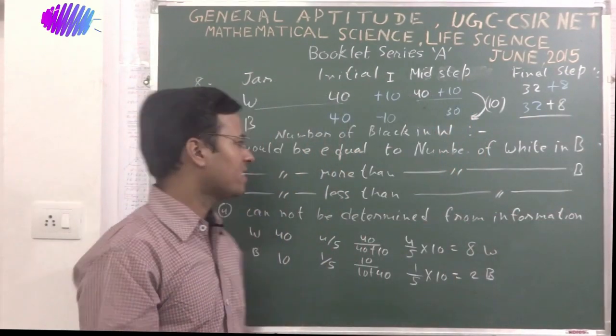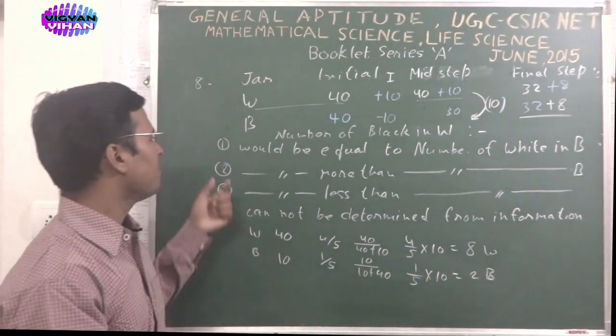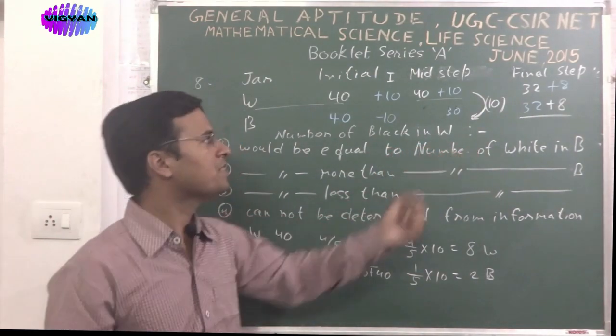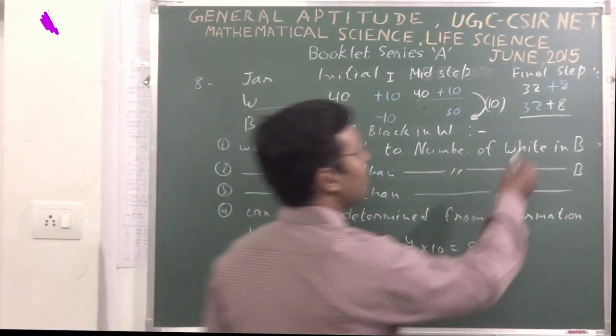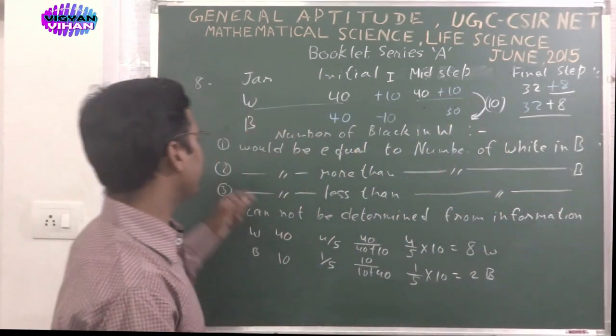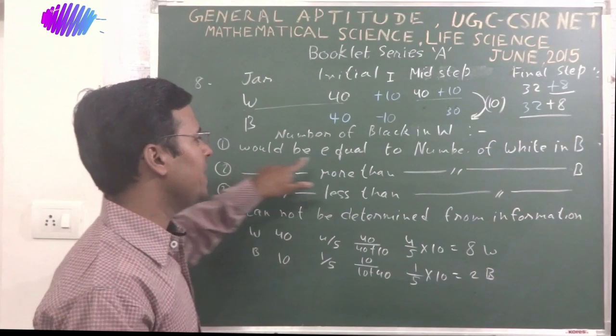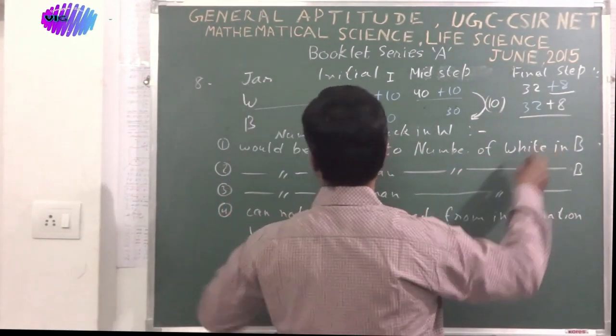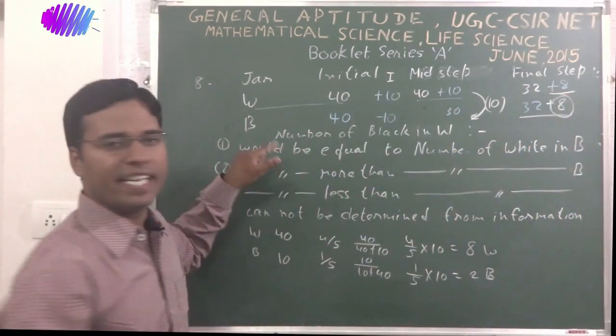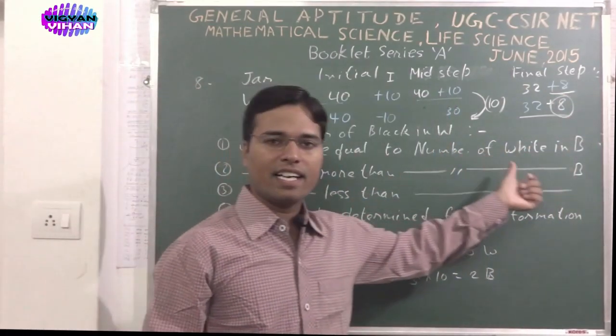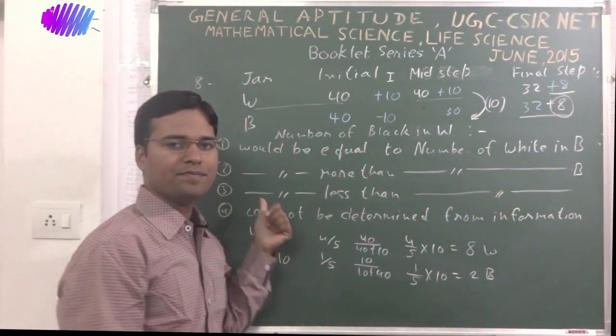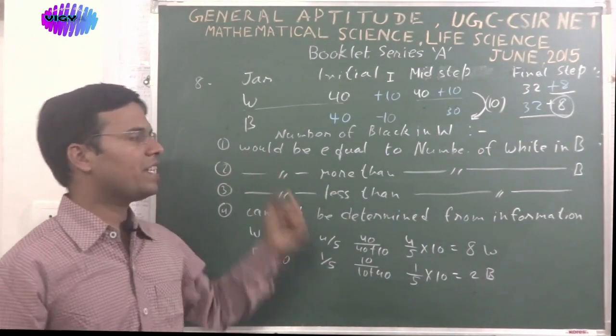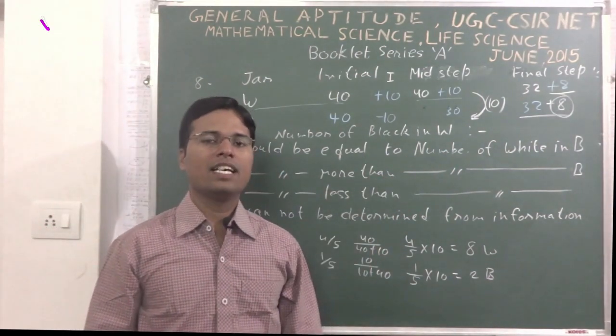Now we can compare the situations. There are 4 options. So the question is asking the number of black marbles in W. The number of black marbles in W, here it is 8. Then compare with the situations would be equal to number of white in B. The number of white, it is also 8 in B. So the correct answer is option 1. The number of black marbles in jar W would be equal to the number of white marbles in jar B.